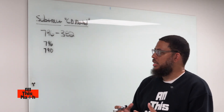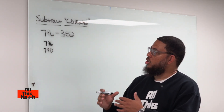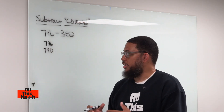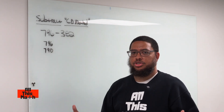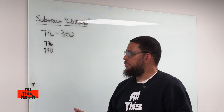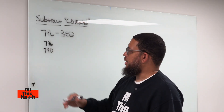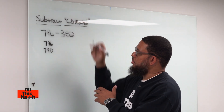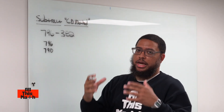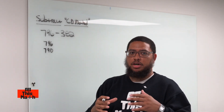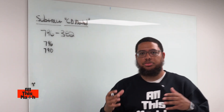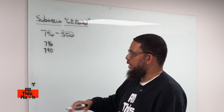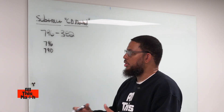We're going to go down to 700 because it's an easier subtraction problem — that's the goal. The goal with the combined differences method is to create a series of easier subtraction problems. So 796 minus 790 is not that difficult, and then we go from 790 down to 700.